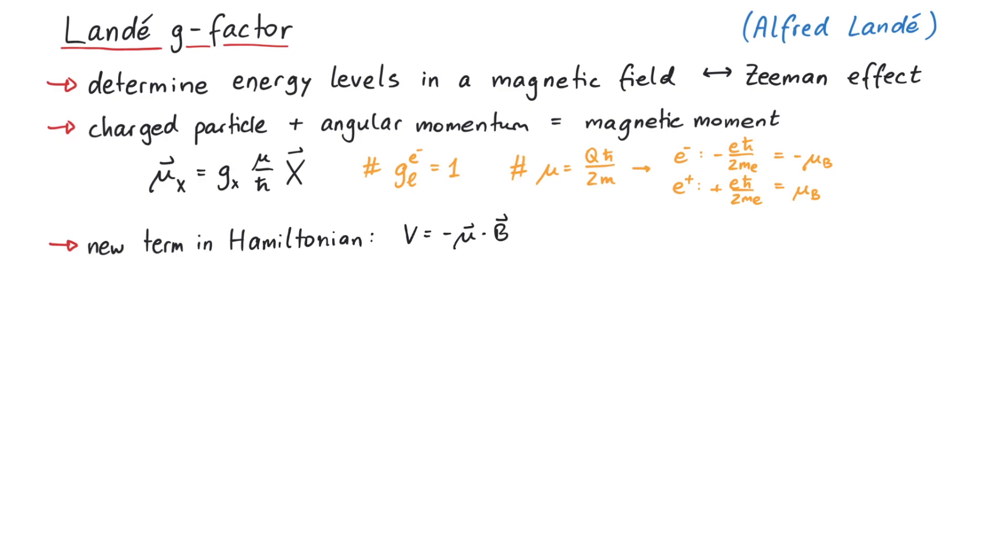So if a particle has orbital angular momentum and spin, it has both a mu l and a mu s, which can be written like this. However, we know that in a weak magnetic field, l and s couple to a total angular momentum j, so that we could assume that the magnetic moment is now given by a different g-factor and j.